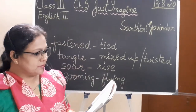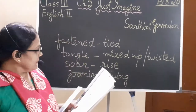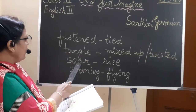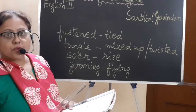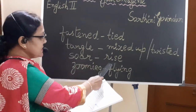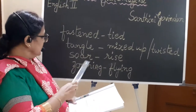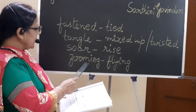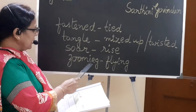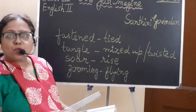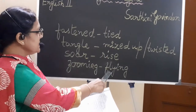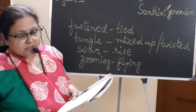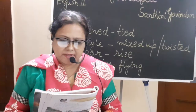Now let us come back to the poem. Look at this word: S-O-A-R. Soar means to rise, to fly high. Next: Z-O-O-M-I-N-G. Zooming here means flying. Mark these words, learn their spellings, and learn their meanings.